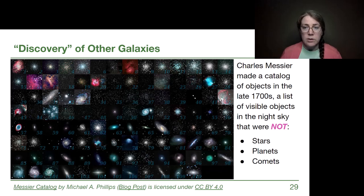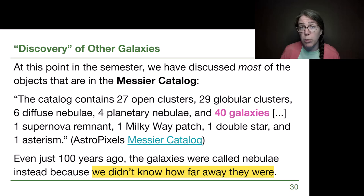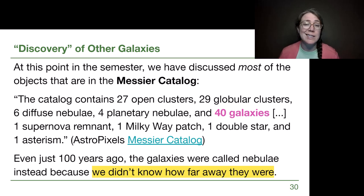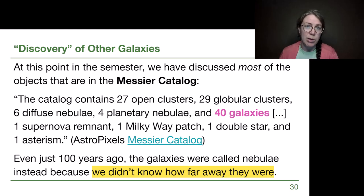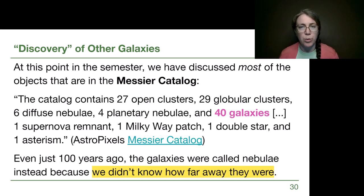Looking at all of these, these are objects we've already started to learn about — a lot of them are star clusters. There are 27 open star clusters, 29 globular star clusters, six diffuse nebulae (emission or reflection nebulae), four planetary nebulae marking the end of a low mass star's lifetime, and 40 galaxies, plus one supernova remnant, one extra bright patch of the Milky Way, a double star, and an asterism.